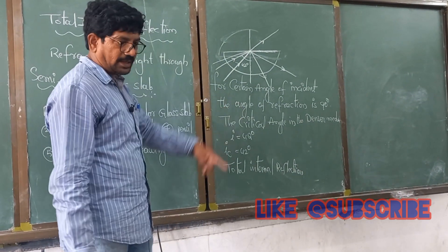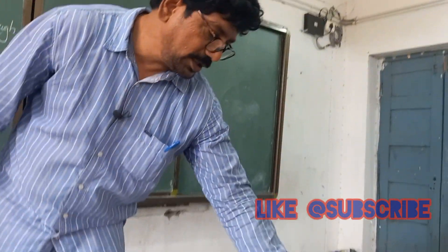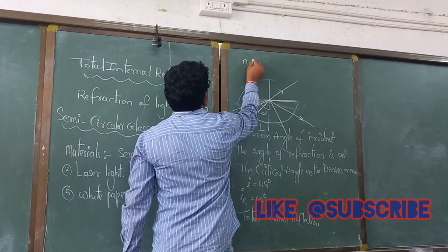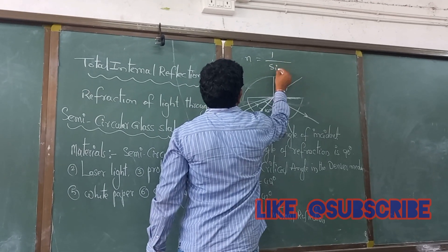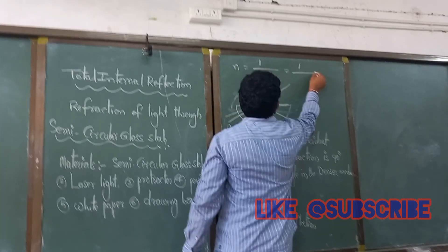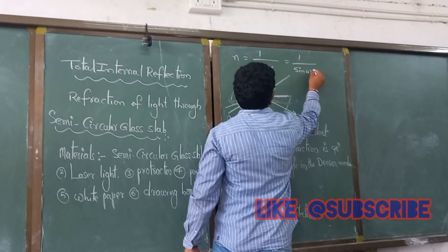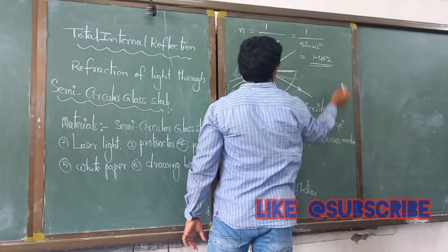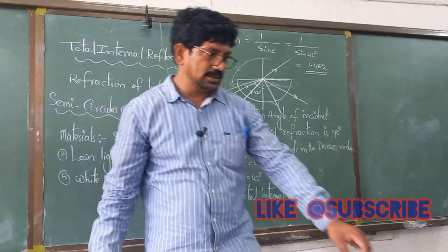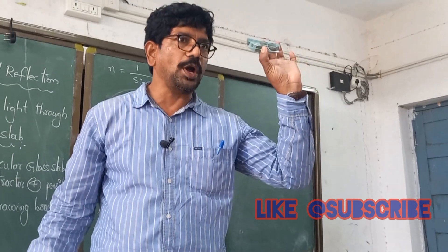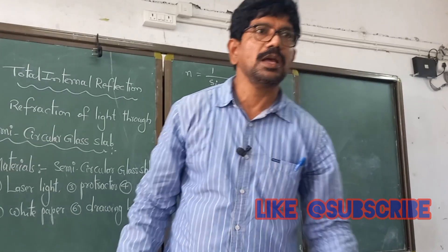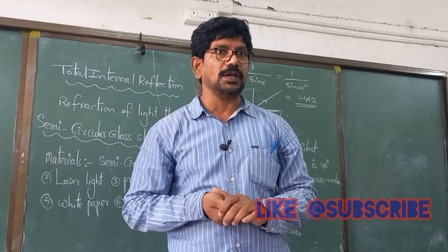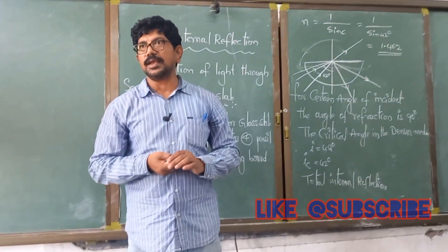So how do we calculate the refractive index of this semicircular glass slab? The formula is: refractive index n = 1 / sin(c), where c is the critical angle of 42 degrees. This is roughly equal to 1.462. So the refractive index of this semicircular glass slab is 1.462 — how much the material bends the light when it passes through it.